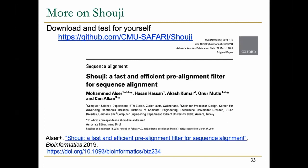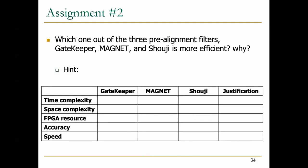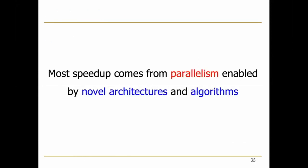The homework is to summarize the time complexity, space complexity, FPGA resources, accuracy, and speed for Gatekeeper, MAGNET, and SHUJI, and determine which one is better based on these metrics. This is an optional homework — if you complete it, please send it over email for discussion.